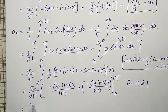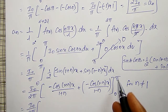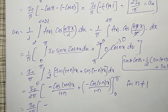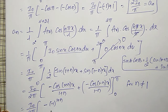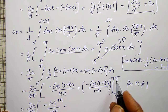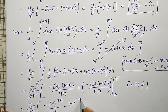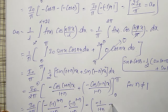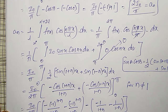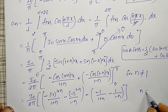Substituting upper limit (x = π) and lower limit (x = 0): upper limit gives −(−1)^(1+n)/(1+n) − (−1)^(1−n)/(1−n), and lower limit gives −1/(1+n) − 1/(1−n). This gives the expression for Aₙ with n ≠ 1.